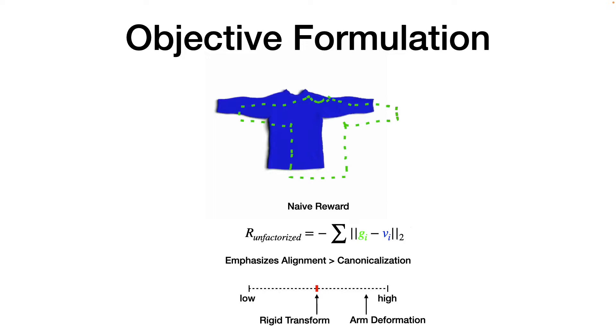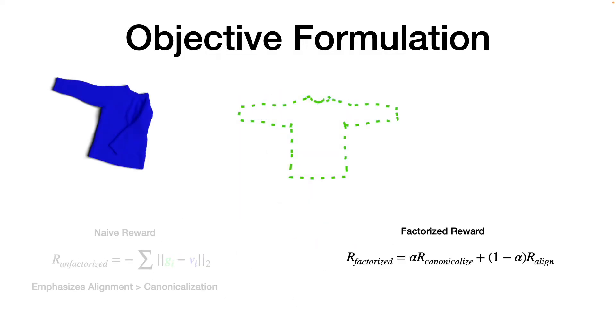Instead, we propose a factorized reward formulation, which weighs between canonicalization and alignment. Now, suppose that we transform the goal to minimize the alignment distance and obtain this configuration that is shown in red.